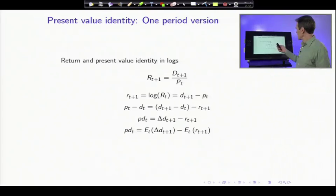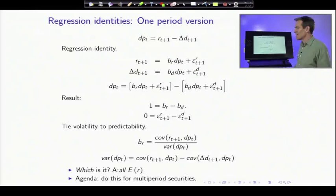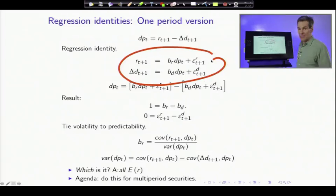Now, this return identity, let's look at those regressions a little more in detail. And the return identity helps us to digest the regressions. Here's the trick. Here are the regressions we've been running: returns on dividend price ratios and dividend growth on dividend price ratios. And this just establishes the notation, b_R, b_D, epsilon_R, and epsilon_D.